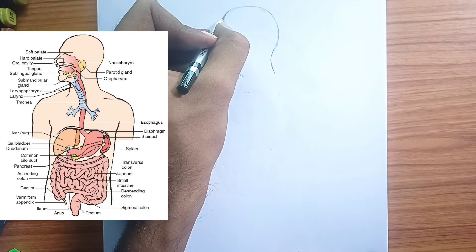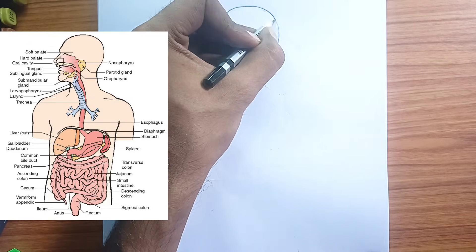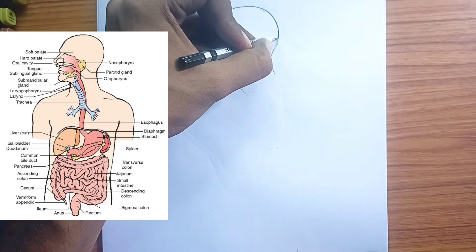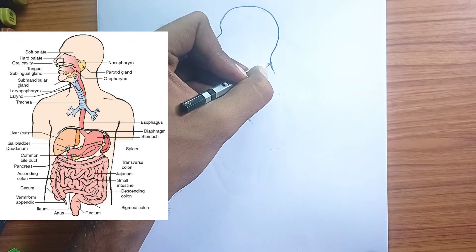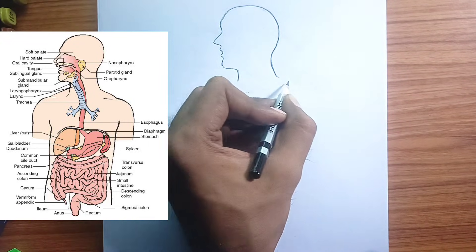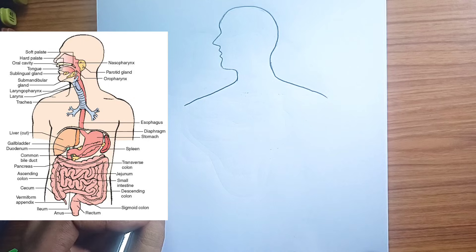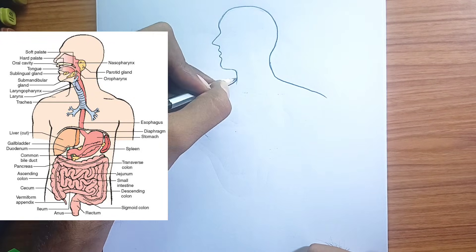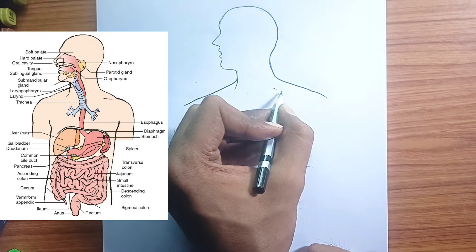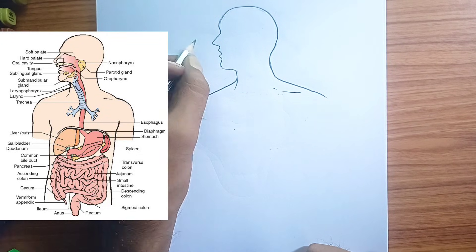Small intestine: this is the primary site for nutrient absorption. Enzymes from the pancreas and bile from the liver aid in the digestion of carbohydrates, fats, and proteins. The walls of the small intestine are lined with villi and microvilli, increasing the surface area for absorption into the bloodstream. Large intestine.